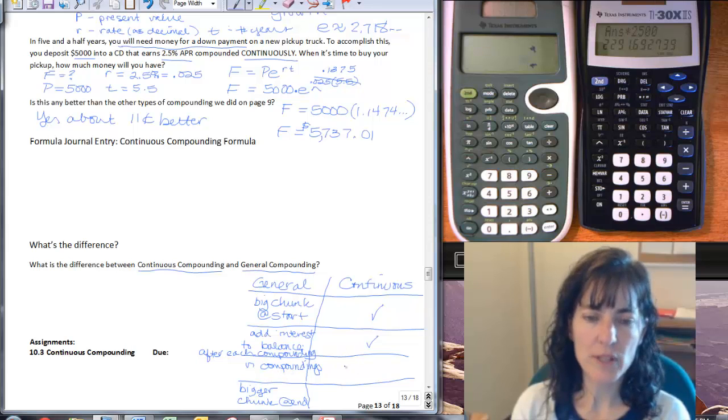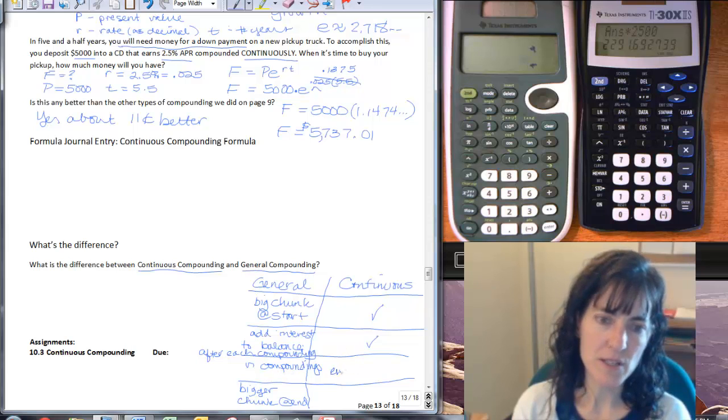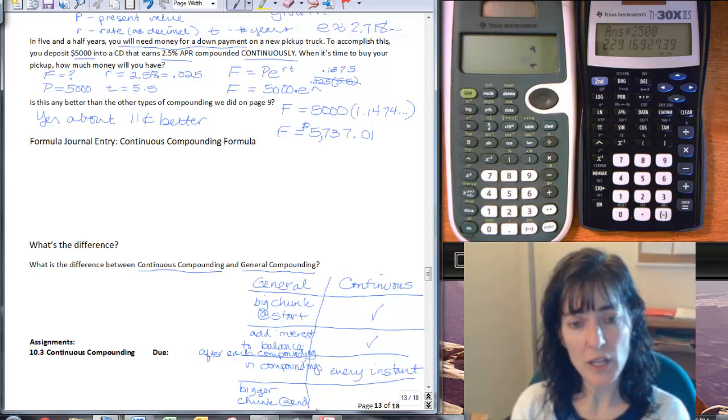And then there are n compoundings for general. Now this is every instant for continuous, and then you get a bigger chunk at the end, and that's also true for continuous.